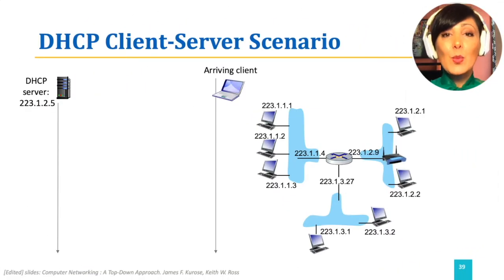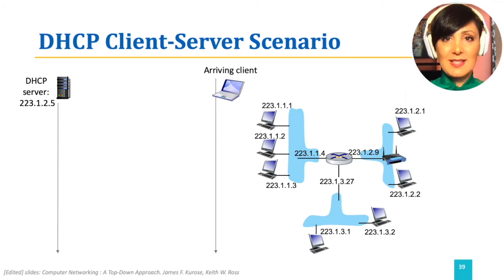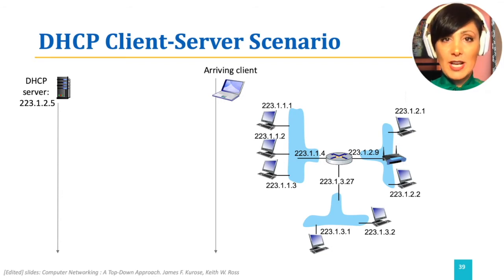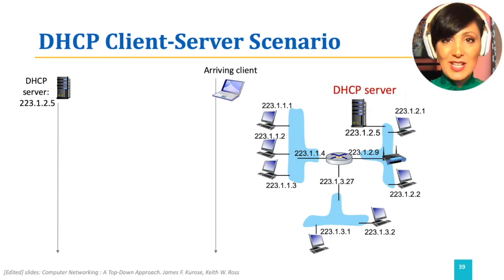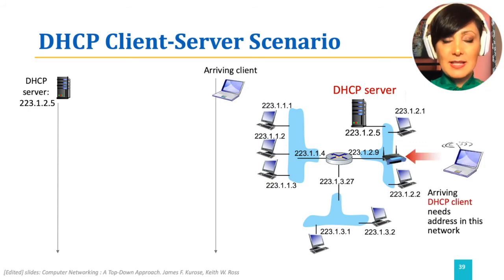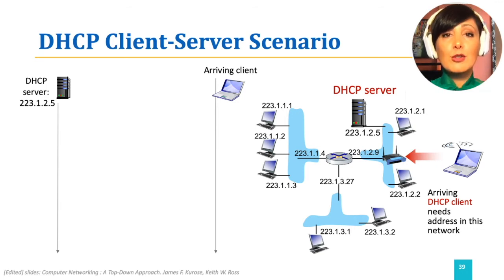Let's see this process with an example. Suppose we have a network with three subnets. There is a DHCP server for the 223.1.2.0/24 subnet on the address 223.1.2.5. A new laptop arrives at the subnet and connects to the Wi-Fi access point with address 223.1.2.9.